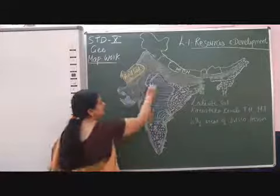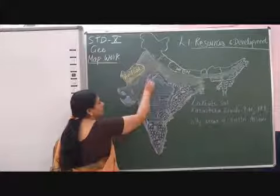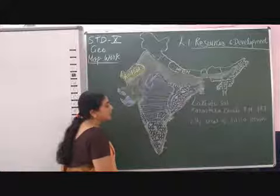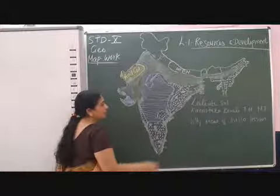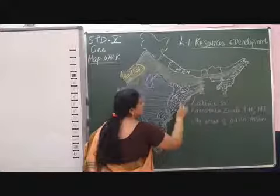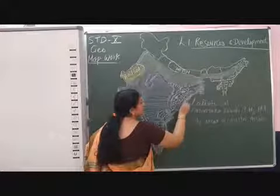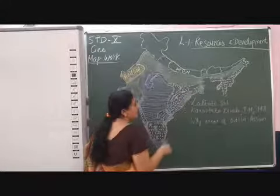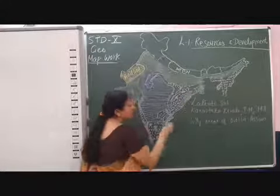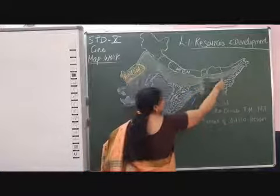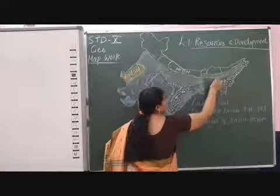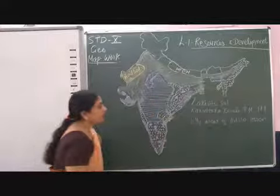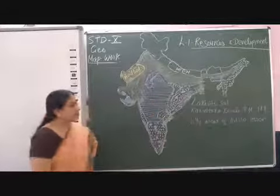Then Madhya Pradesh — this part of Madhya Pradesh — laterite soil is found here. Then the hilly areas of Orissa — this part is Orissa's hilly area — laterite soil is found here as well. And then Assam — the upper part or hilly part of Assam — laterite soil is found here too.